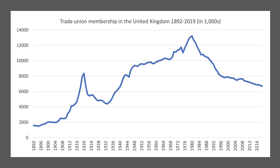Trade union membership in the UK has been in decline since the late 1970s. This chart shows trade union membership in the UK since 1892, and it peaked at about 13 million in 1978-79. Margaret Thatcher was elected in 1979 and the following decade there was a decade or more of trade union legislation, which stripped away many of their legal powers to strike and take industrial action of different types.